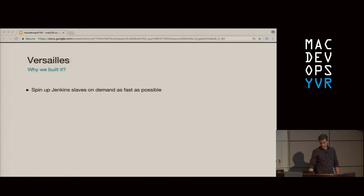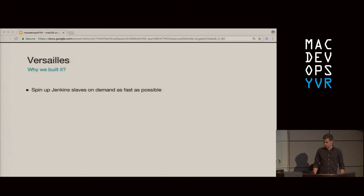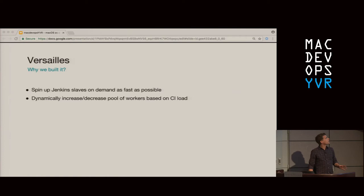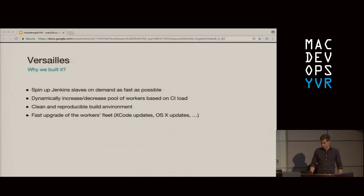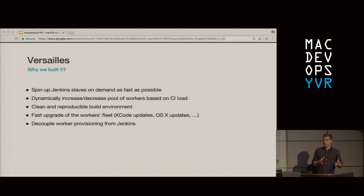So, Versailles — why did we build Versailles? We needed a system that could spin up VMs, or more generally Jenkins workers, as fast as possible and as fast as the infrastructure could handle. This would in turn provide resources for the CI build and test jobs. The system should be able to dynamically increase and decrease the pool of workers based on the CI load. We wanted a clean and reproducible build environment — a fresh macOS virtual machine for every build and test job. And historically, Xcode and macOS upgrades were a long and manual process, so we wanted Versailles to automate this and make it as fast as possible. Finally, we wanted to decouple the provisioning process from Jenkins as much as possible.